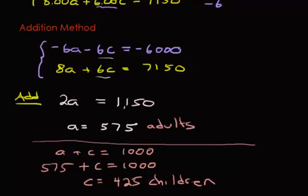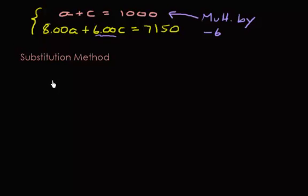So 425 children and 575 adults. Now let's quickly run through the substitution method. The first step is to pick one of your equations and solve for a variable. I'll pick the first equation because you want equations that have a coefficient of 1. Both of these have a coefficient of 1, so it doesn't matter which variable I solve for. I'll solve for C. So C equals 1,000 minus A. That's step one.